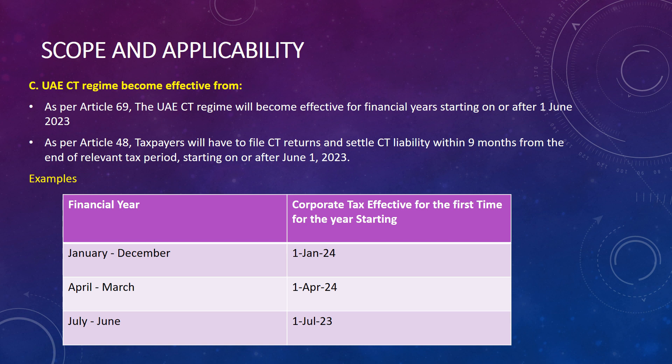Let's understand these dates with examples. If your financial year runs from January to December, your first effective tax period will start from 1 January 2024. If your financial year is April to March, then your first tax period will start from 1 April 2024. If you are following a July to June financial year, then your corporate tax year will start from 1 July 2023. So please plan your business and financial year accordingly.